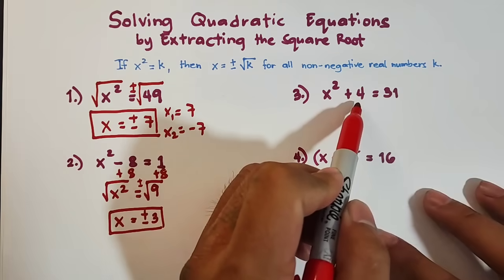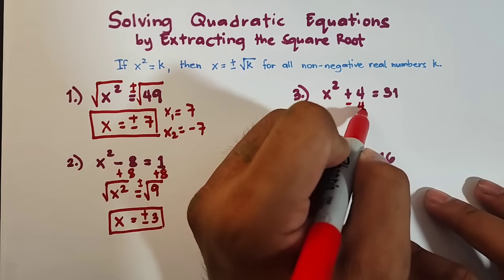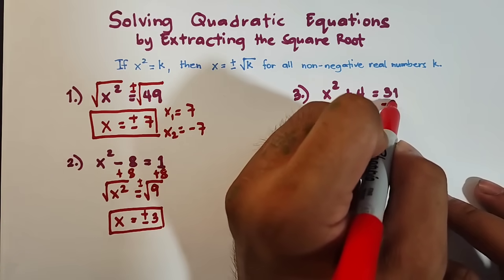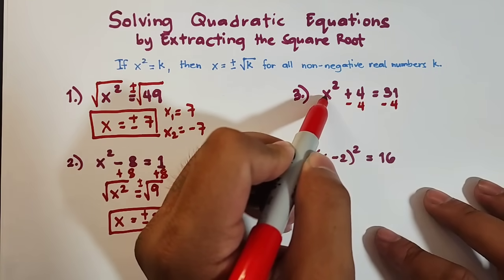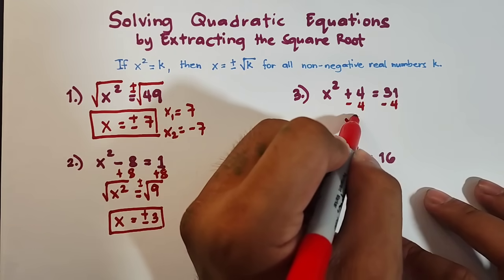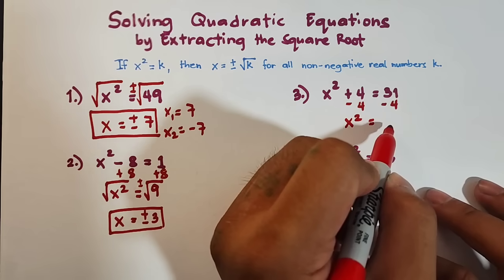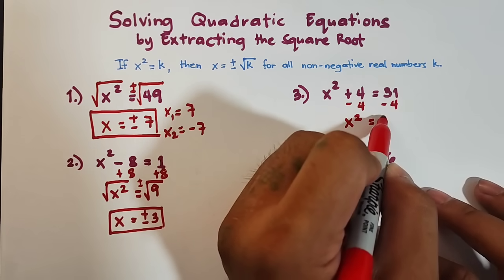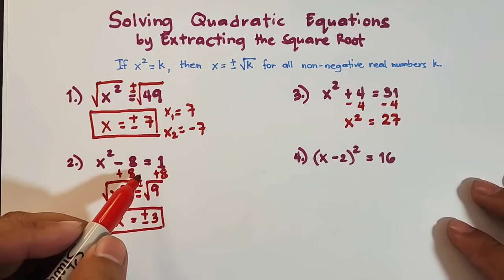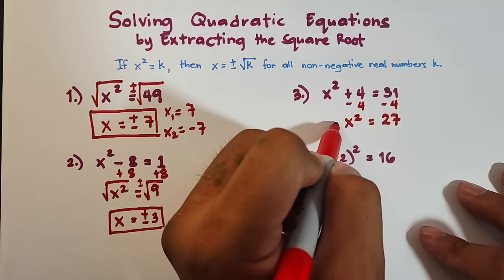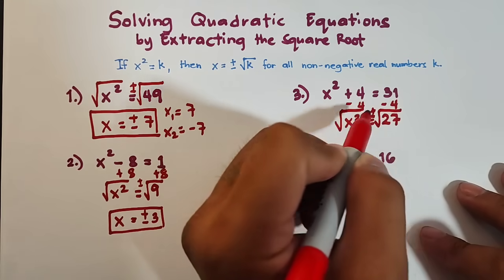We need to eliminate plus 4, so we subtract 4 from both sides of the equation. The plus 4 minus 4 becomes 0 and is eliminated. We copy x squared, and on the other side 31 minus 4 is 27. So we need to get the square root of x squared and the square root of 27, remembering positive and negative.